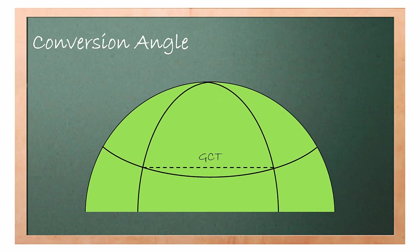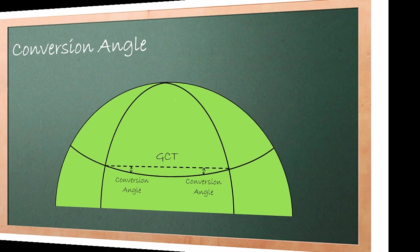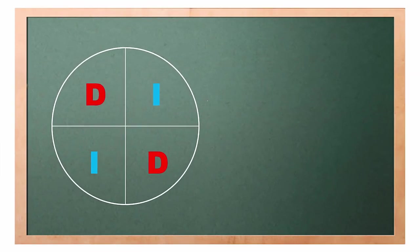The last concept we need to understand is conversion angle. Conversion angle is the angle between a great circle track and a rhumb line track. In this scene I will try to explain how to use this diagram in order to solve great circle track problems.